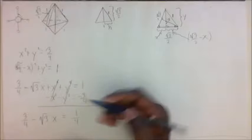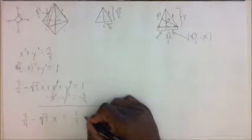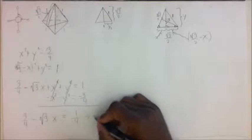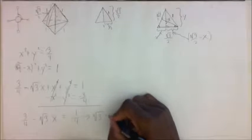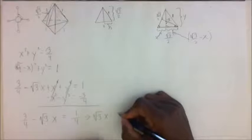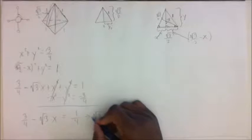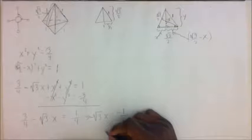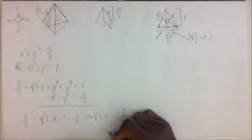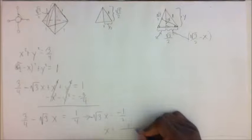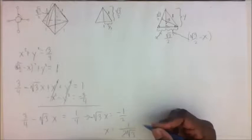If we subtract three over four from both sides, we get minus the square root of three times x equals minus one over two, which means x is equal to one over two times the square root of three.